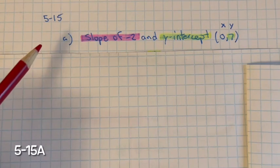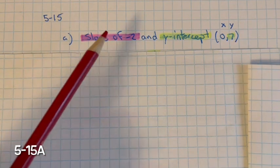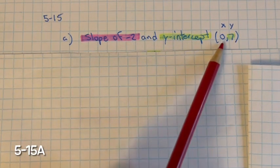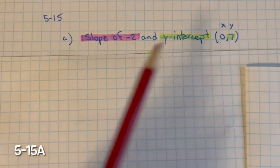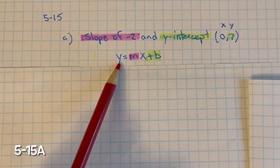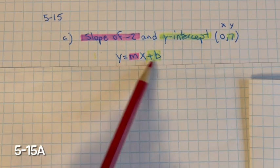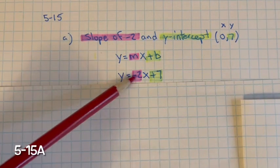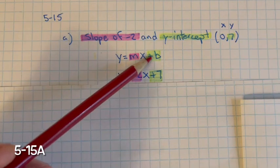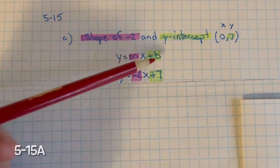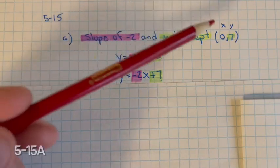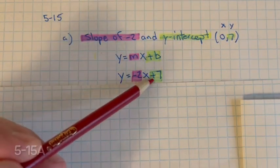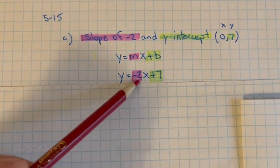For problem 515, I need to write the equation of a line with a slope of negative 2 and a y-intercept at (0, 7). Remember, a line has an equation of y equals mx plus b — slope-intercept form. So m, the slope, is negative 2, and b, the y-intercept, is positive 7. So y equals negative 2x plus 7.